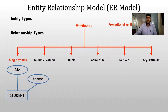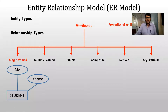To indicate a single-valued attribute, we use an oval notation. The oval notation is used to highlight attributes, and we use a connector to join the attribute to the entity.